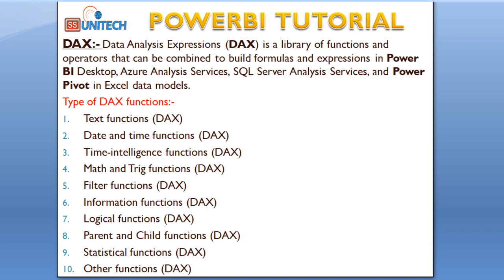Next are statistical functions. These functions perform aggregations such as creating sums and averages or finding minimum and maximum values. In DAX, you can also filter a column before aggregating or calculating it.